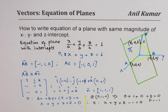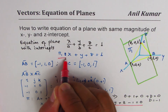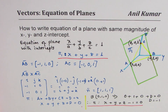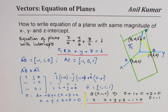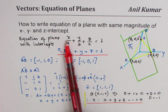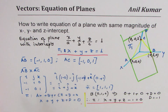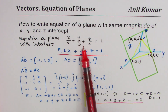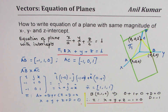We get the same equation following the cross-product method. The intercept form is an extremely good method, provided you know the formula. Just as for a line we have x/a + y/b = 1, for a plane it extends to x/a + y/b + z/c = 1 — there is a nice correlation. I'm Adil Kumar; I hope this helps. Please like, share with your friends, and feel free to write comments. Thank you and all the best.